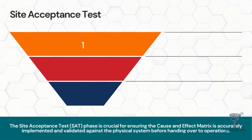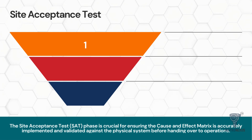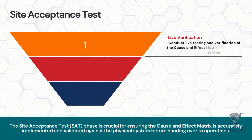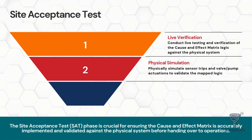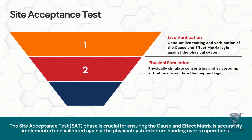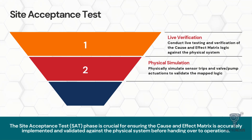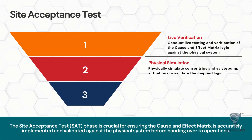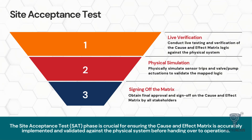With construction complete and the code loaded, we reach the site acceptance test, or SAT. This is the moment of truth. Unlike the FAT, which was virtual, this is live verification. We conduct physical simulations on the actual hardware. We might inject a signal into a pressure transmitter to fool it into thinking pressure is high and then physically watch the shutdown valve close in the field. We are validating the mapped logic against the physical system's response. Once all tests pass, we obtain the final sign-off on the cause and effect matrix from all stakeholders, certifying the plant is safe to start.